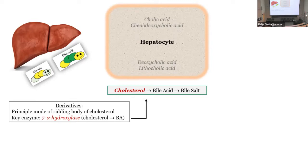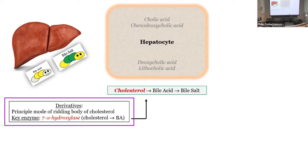The first step is conversion of cholesterol to bile acid. This is how we get rid of cholesterol — the LDL receptor takes cholesterol in, but how does the liver get rid of it? It makes bile acids. You can secrete cholesterol directly into the biliary canaliculi, but that's minor. The main route is bile acid synthesis.